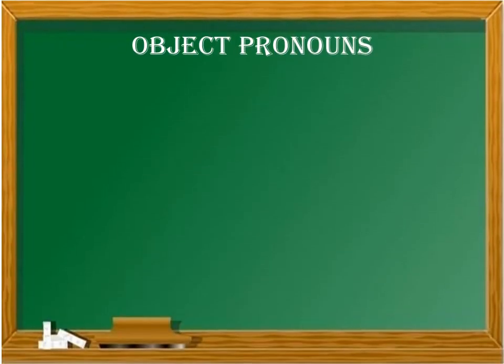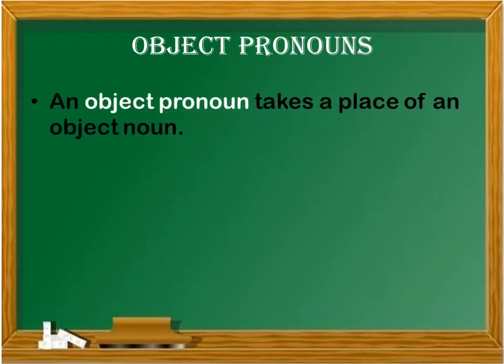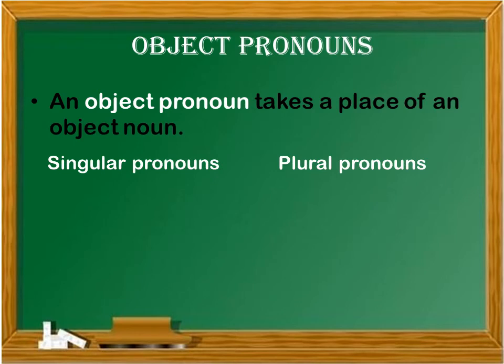Then we have the object pronouns. An object pronoun takes the place of an object noun. We have also singular pronouns and plural pronouns. An object comes after the verb. So whenever we see a pronoun after the verb, it means this is an object pronoun. If it was in the beginning of the sentence, it's a subject pronoun. A subject pronoun comes at the beginning of the sentence; an object pronoun is after the verb.